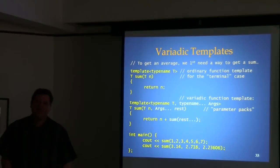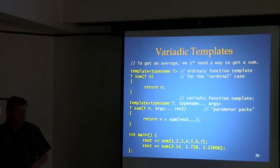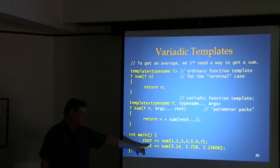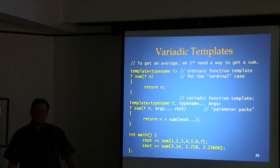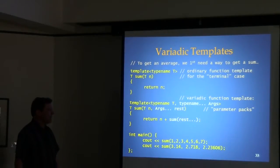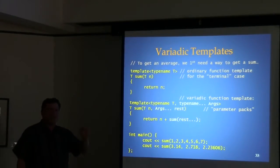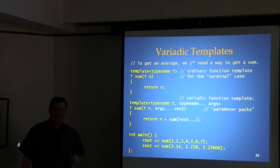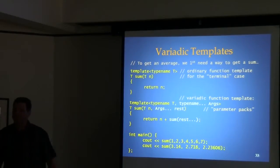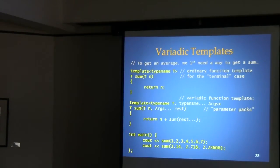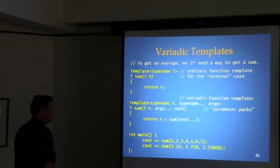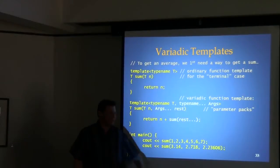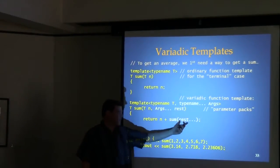Question: can the arguments be different types? Yes, they can — but there's a catch we'll need a couple of slides to address. Question: is dot-dot-dot a token by itself? Yes, it has to be its own token.